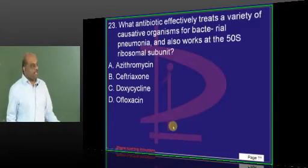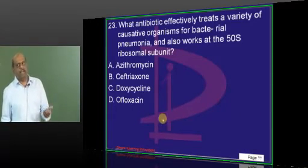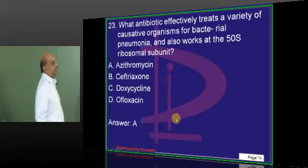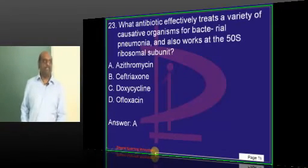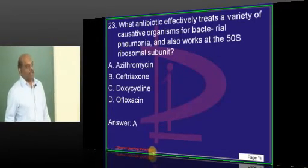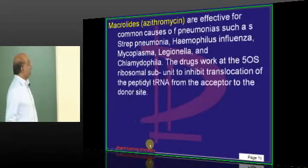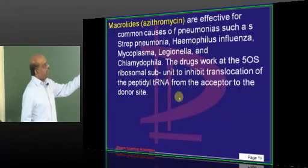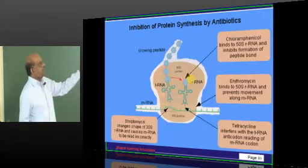What is your answer, doctor? 50S, 30S, 70S. Like a parrot, you must be ready. All the azithromycin, erythromycin, you are having all, what are they called? Macrolides. They are the ones which inhibit the 50S ribosomal subunit.